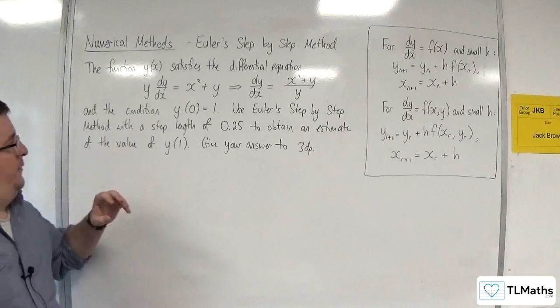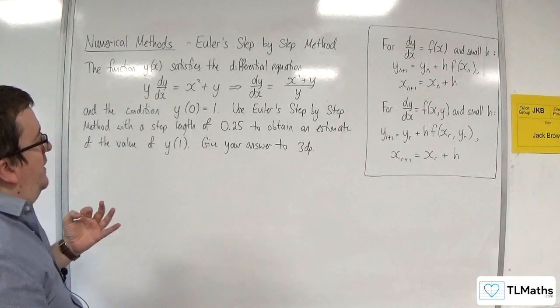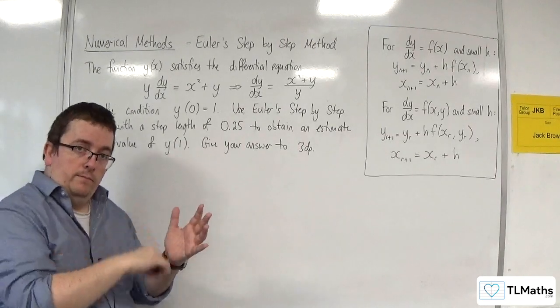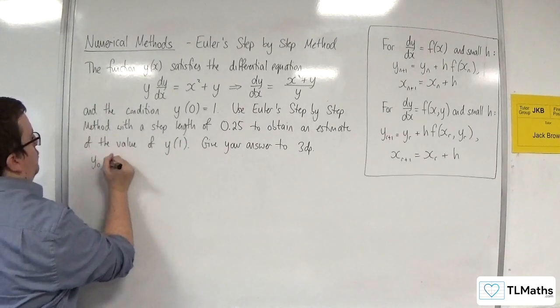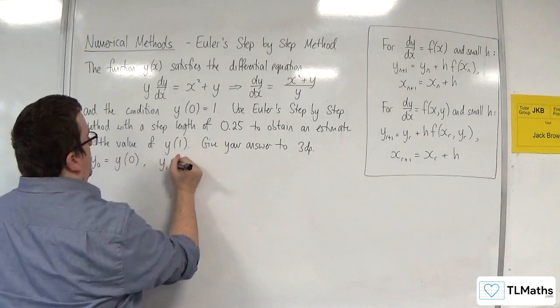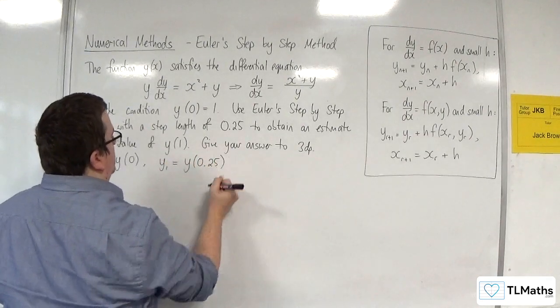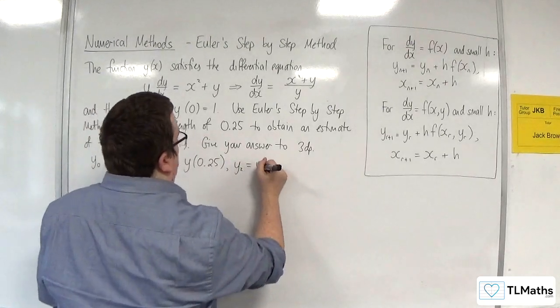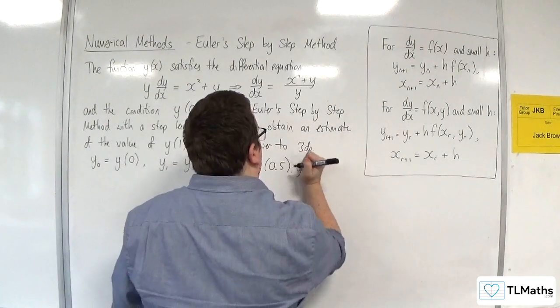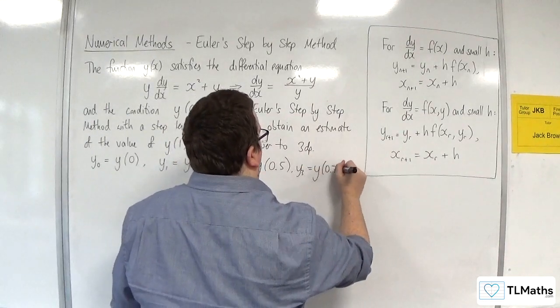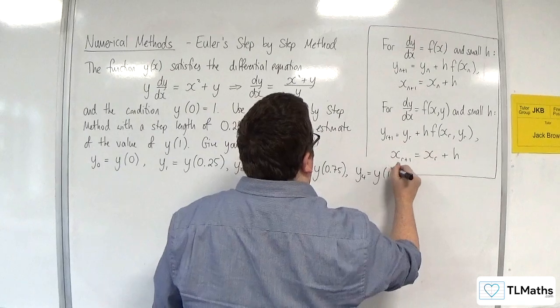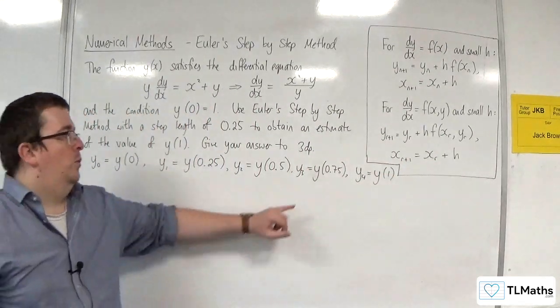First thing to consider is that y of 0 here I'm going to write as y₀. So y₀ is equal to y of 0, and I'm going to have y₁ is equal to y of 0.25, y₂ as y of 0.5, y₃ of y of 0.75, and y₄ will be y of 1. And this is the one that I want to get to. I want to get to y₄.